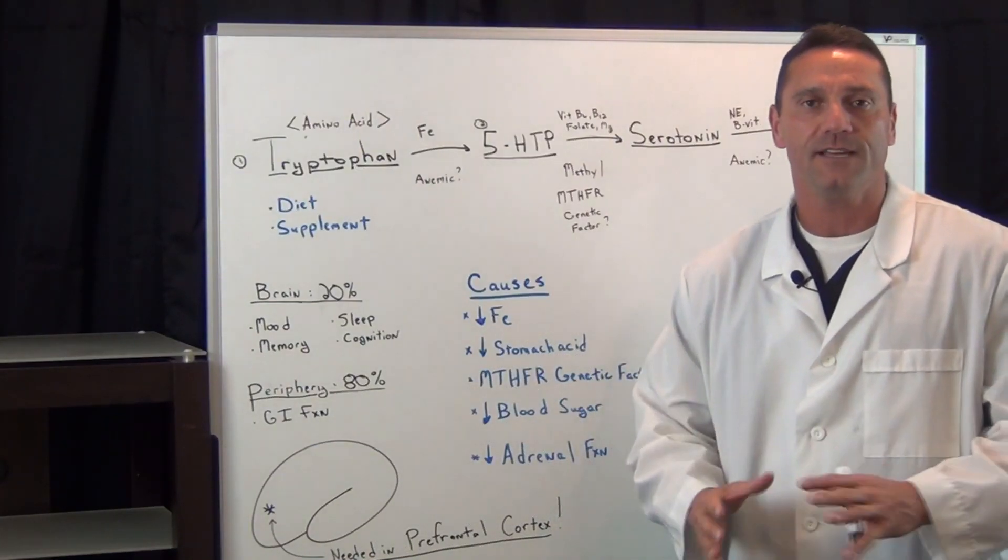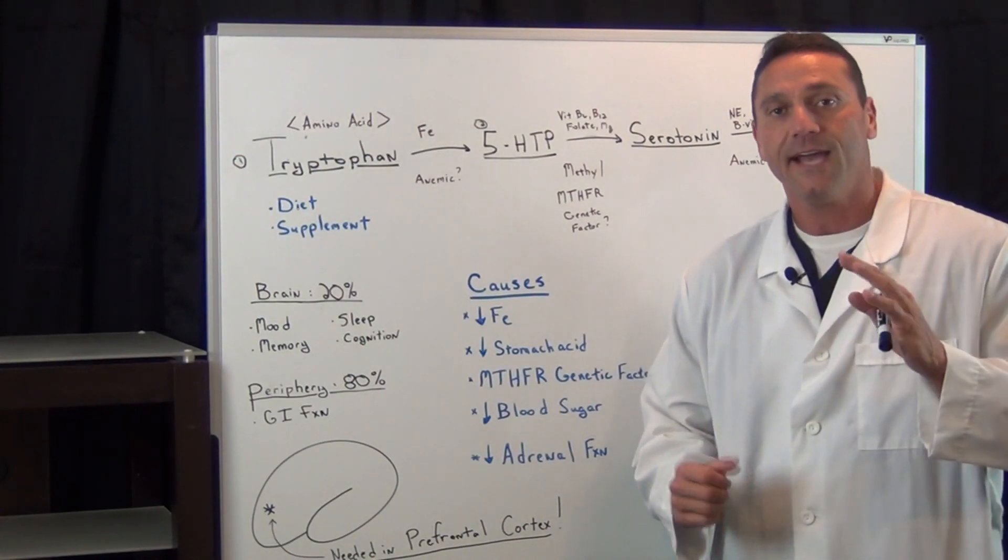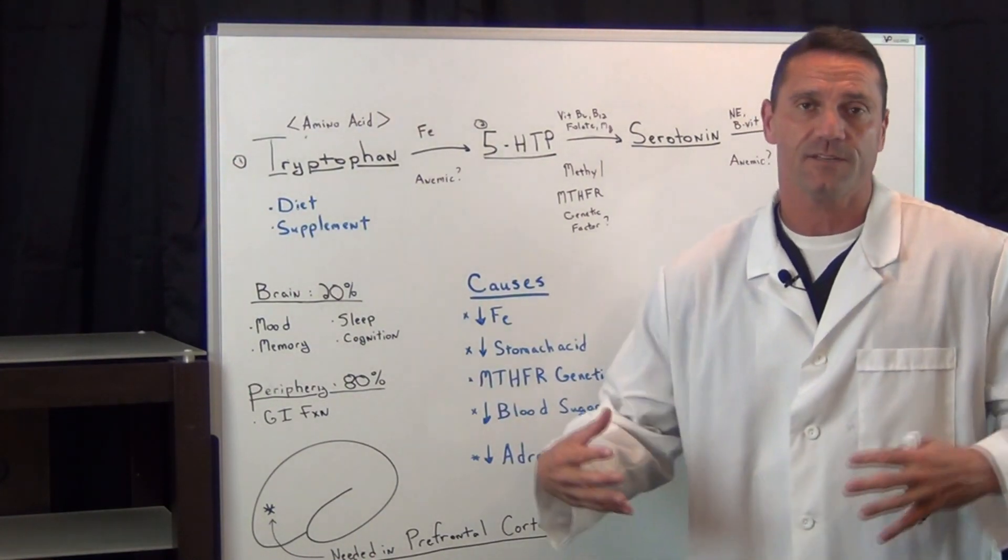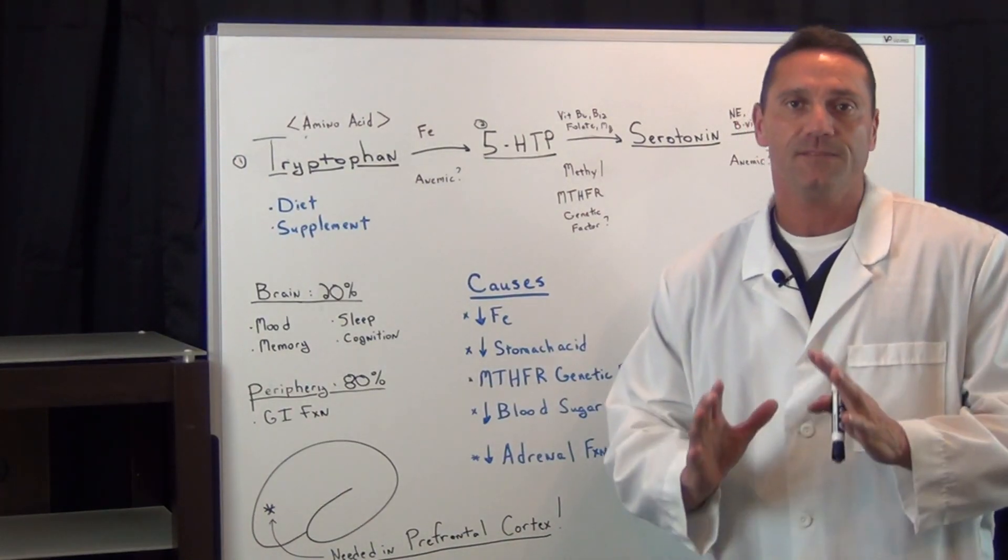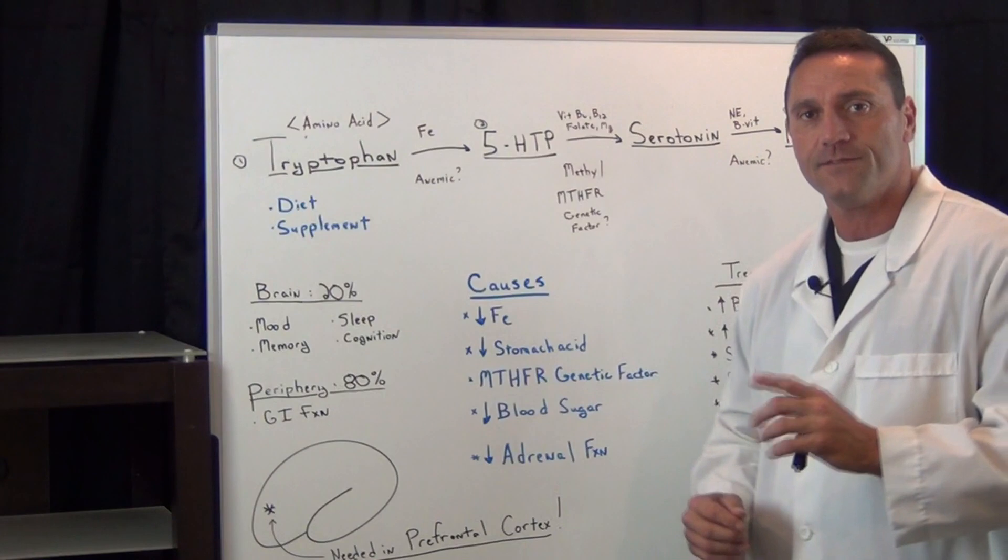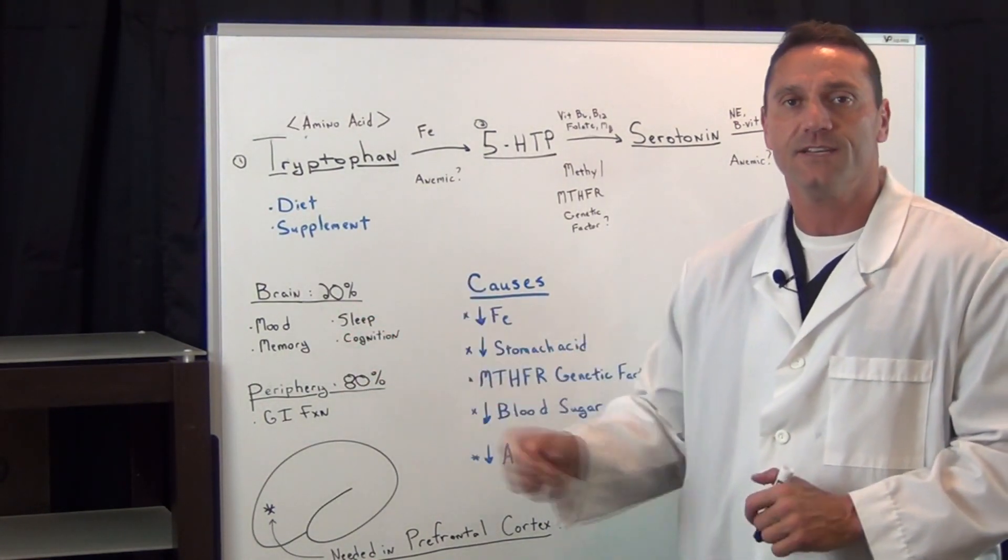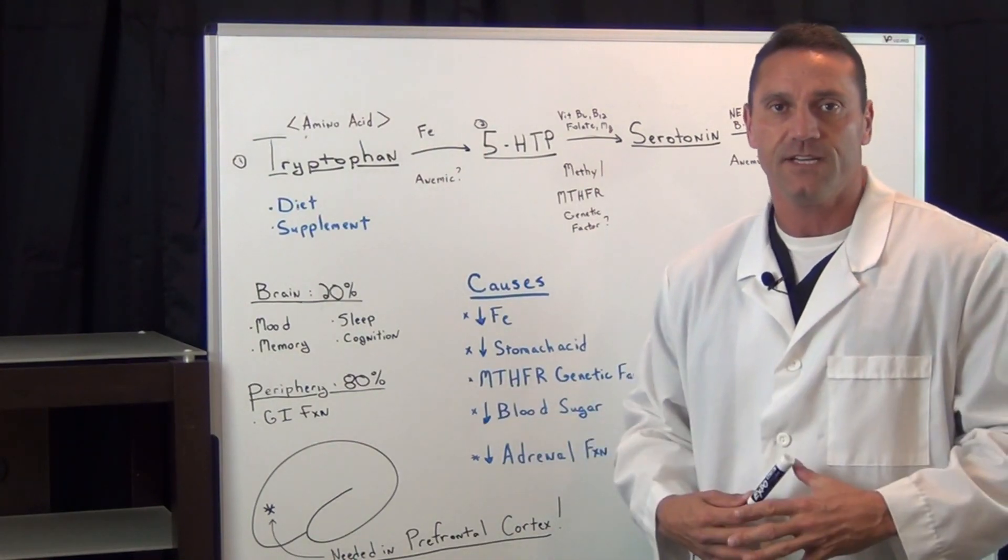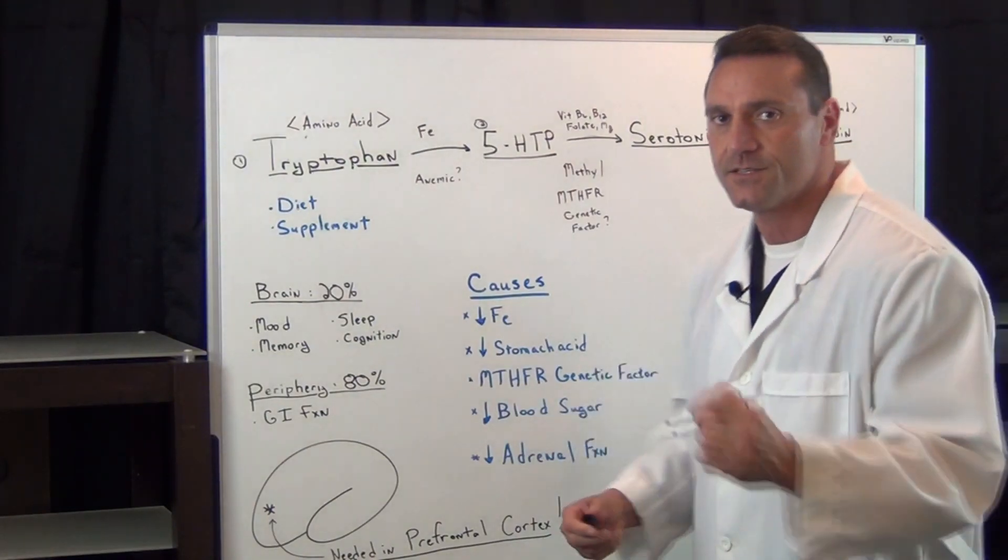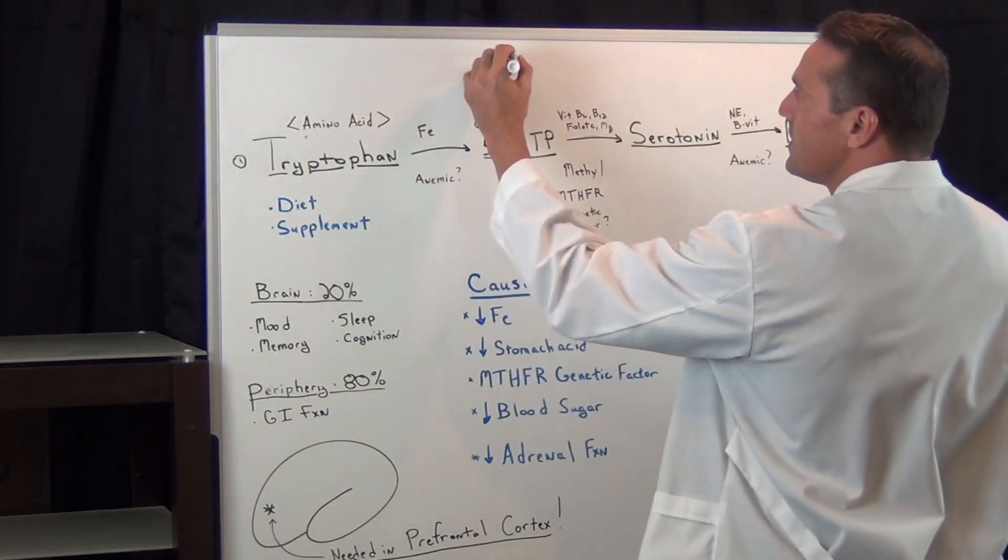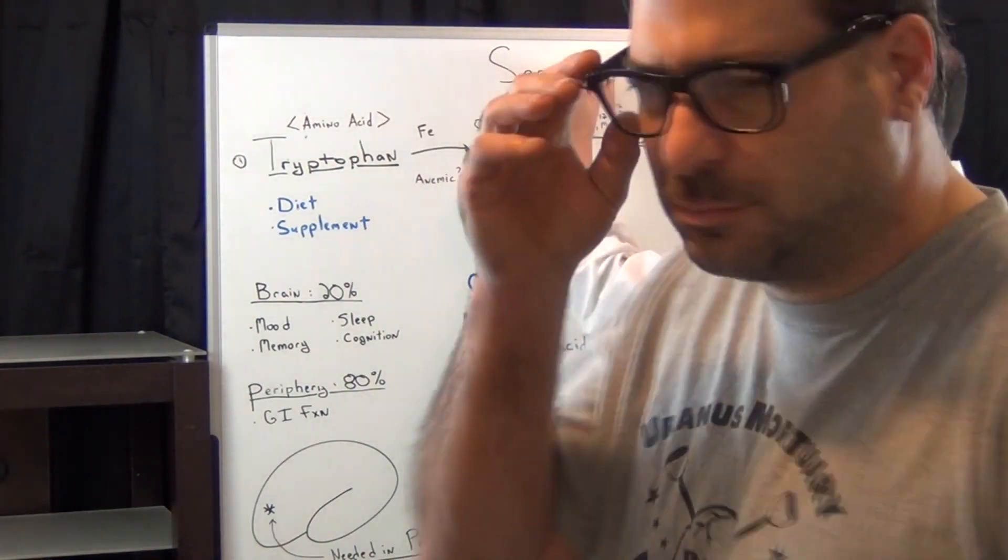Hello, everyone. This is Dr. Jawad. What I'm going to talk about today is a neurotransmitter that is produced 80% in the gut and only 20% in the brain. This particular neurotransmitter is involved in your mood, your memory, your sleep, and believe it or not, your cognition. If you're deficient in this neurotransmitter, it's really going to affect your system. So what is this neurotransmitter? This neurotransmitter is serotonin.